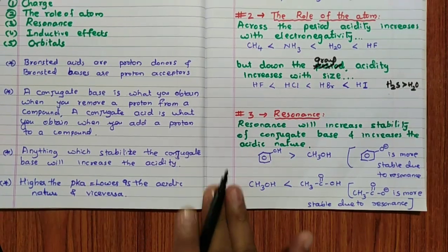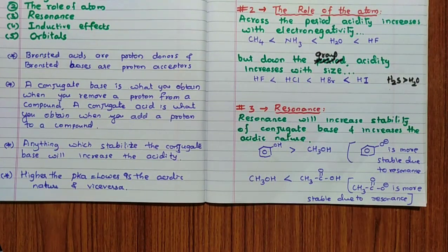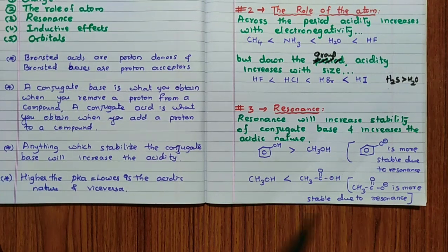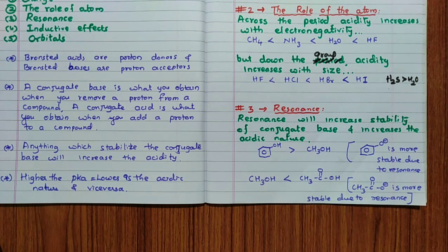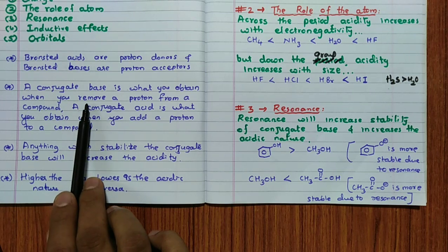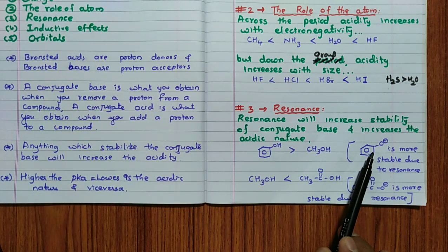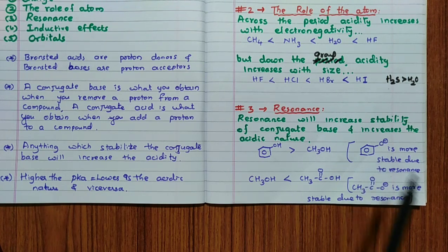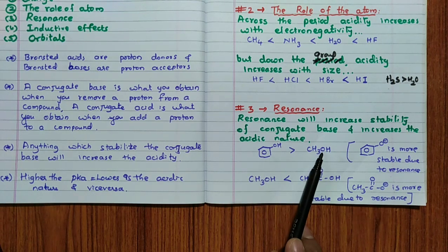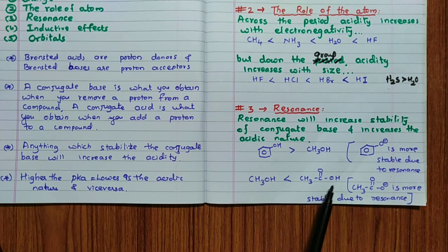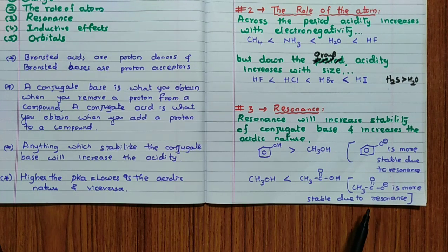The third factor is resonance. Resonance increases the stability of the conjugate base, hence increasing the acidic nature. For example, phenol is more acidic than methanol (CH₃OH) because after removing the proton, the conjugate base — the phenoxide ion — is more stable due to resonance. Similarly, acetic acid is more acidic than alcohols because the carboxylate ion CH₃COO⁻ is more stable due to resonance. Always remember, resonance increases the stability of the conjugate base and thereby increases the acidic nature.